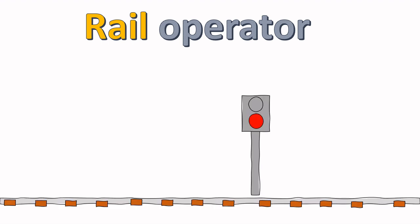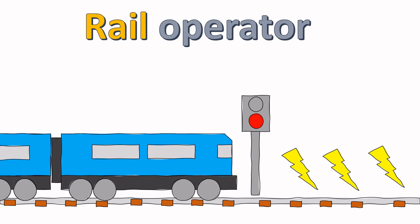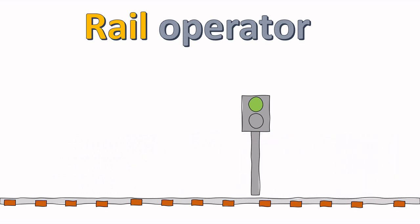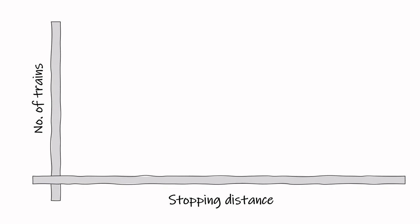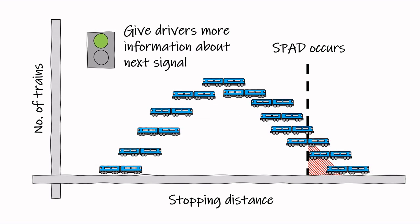The wide variation in braking distances was caused by several factors. Drivers were encouraged not to slow down unnecessarily in order to save on electricity and fuel costs. Drivers would also delay braking as long as possible because they expected the signal to change to green, but they had no way of knowing this. By providing trained drivers with information about the status of signals further up the line, drivers were better able to predict whether a signal would change to green or not, and adjusted their behavior accordingly. The result was that braking distances became more uniform, resulting in fewer SPADs.